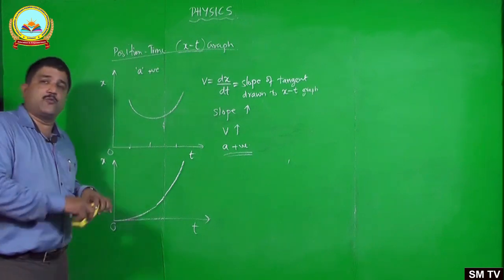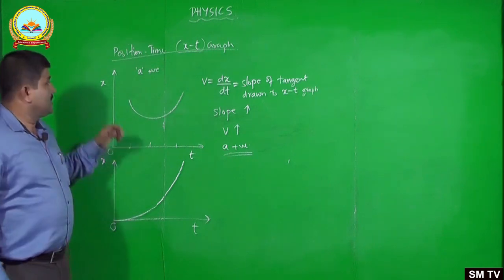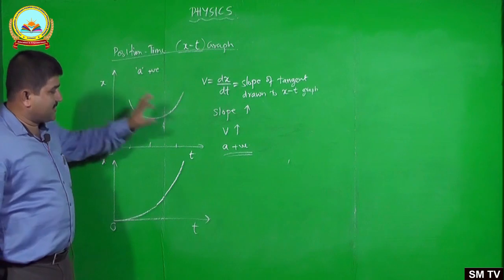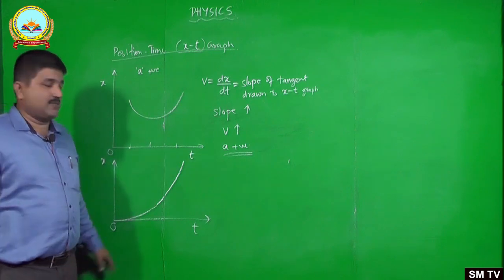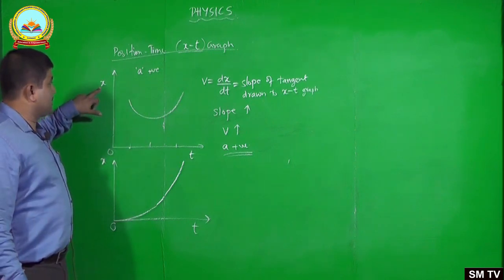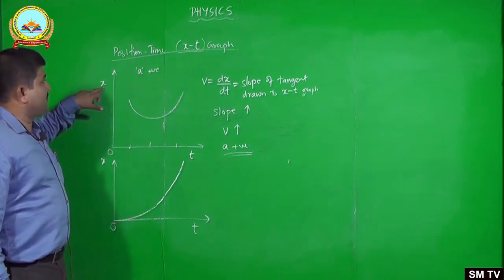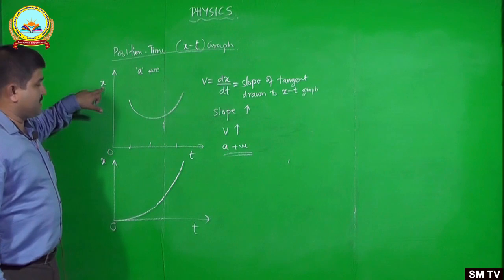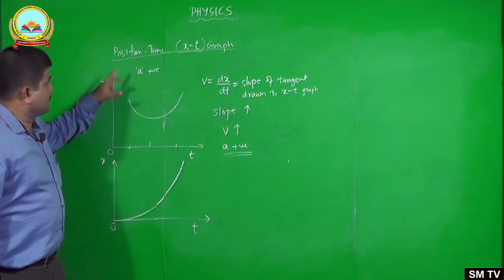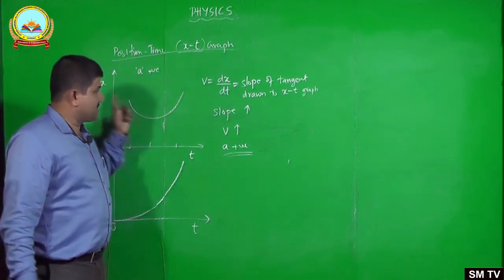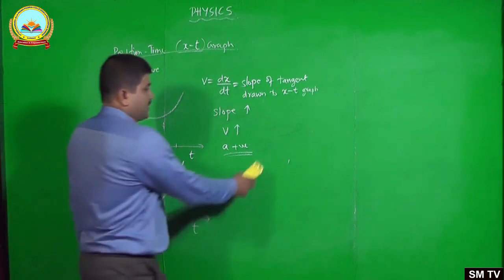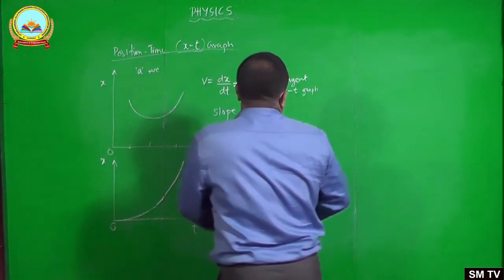Most importantly, whenever you plot a graph, you should know that the quantities along the axes must be noted. Here, X represents position and T represents time. Without that, there is no meaning for the graph.